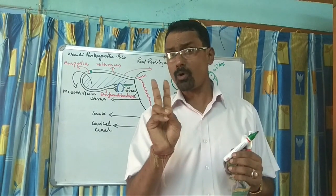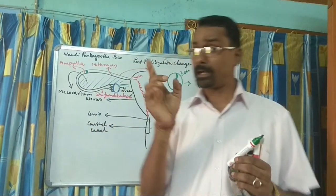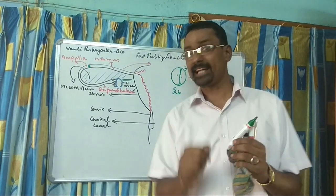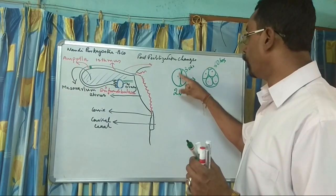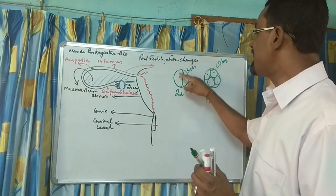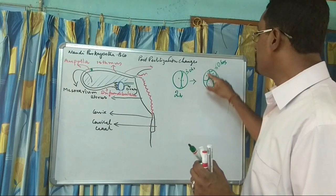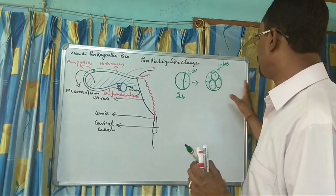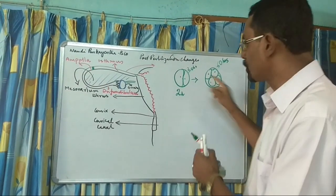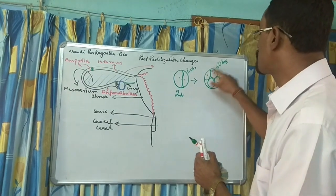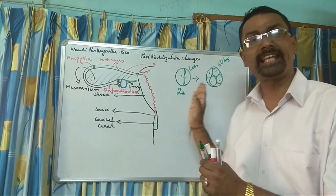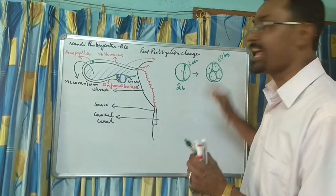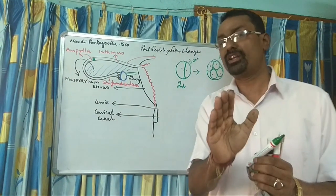The moment the zygote is formed, there is a little difference from mitosis. The volume or space remains the same — after the first cleavage, second cleavage, and further formation, the overall shape and size stays the same. So the size of each individual cell keeps on decreasing. That is the only difference.